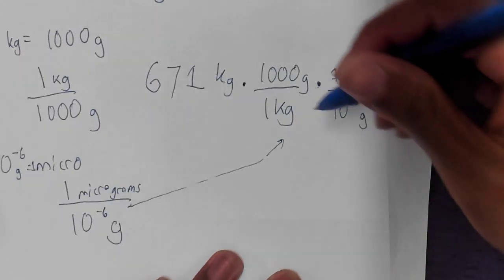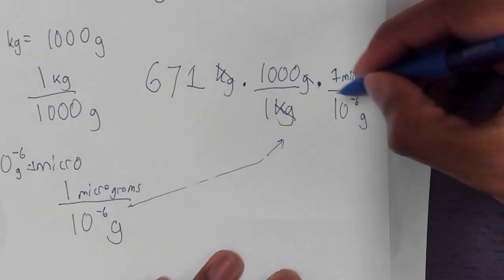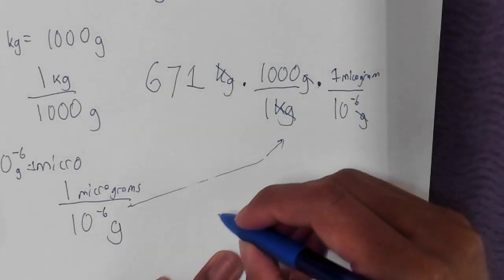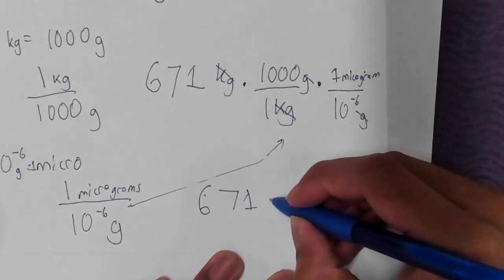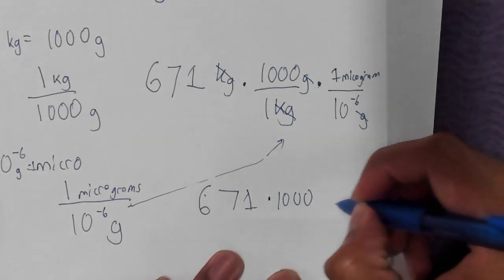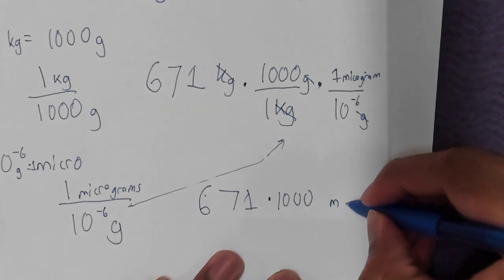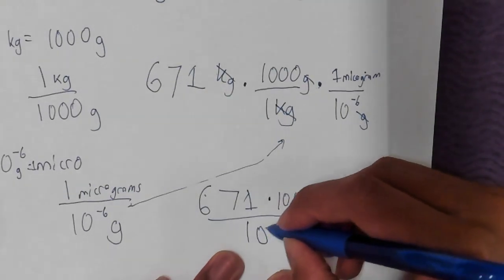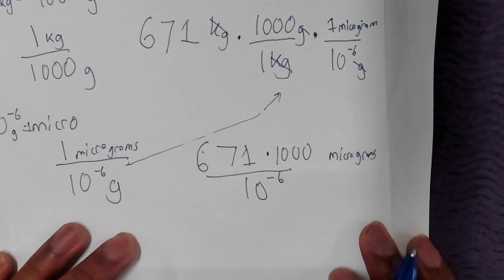The way I explained it before, I'm going to pretend it says grams. 10 to the negative 6 grams equals 1 microgram. Our ratio is 1 micro over 10 to the negative 6 grams. You can write out all the zeros if you want, but I'm going to just keep it in this format 10 to the negative 6. It's a little bit easier for me to work.